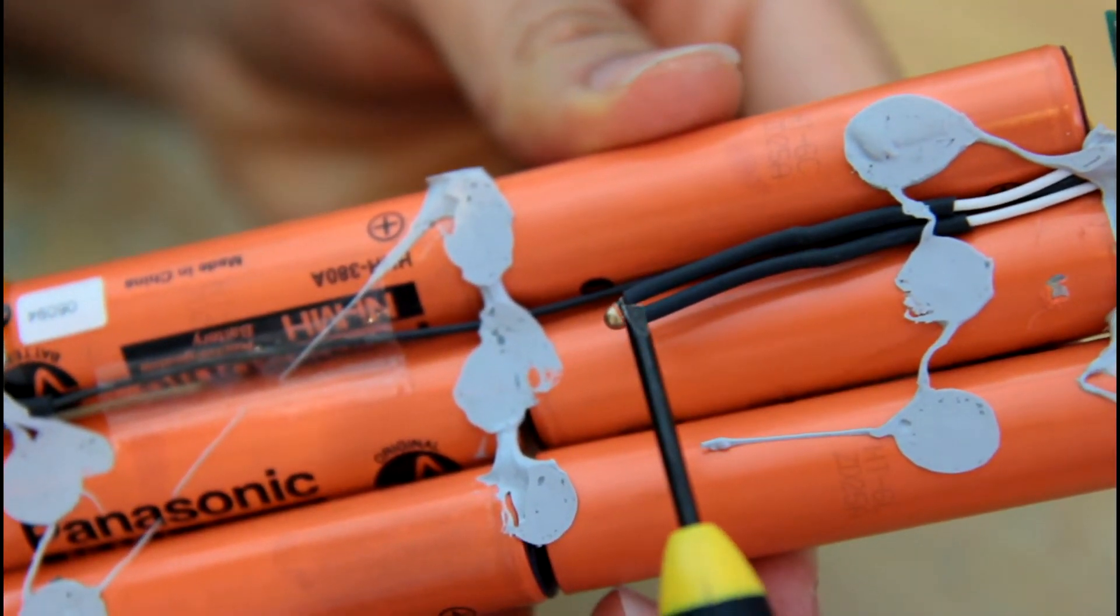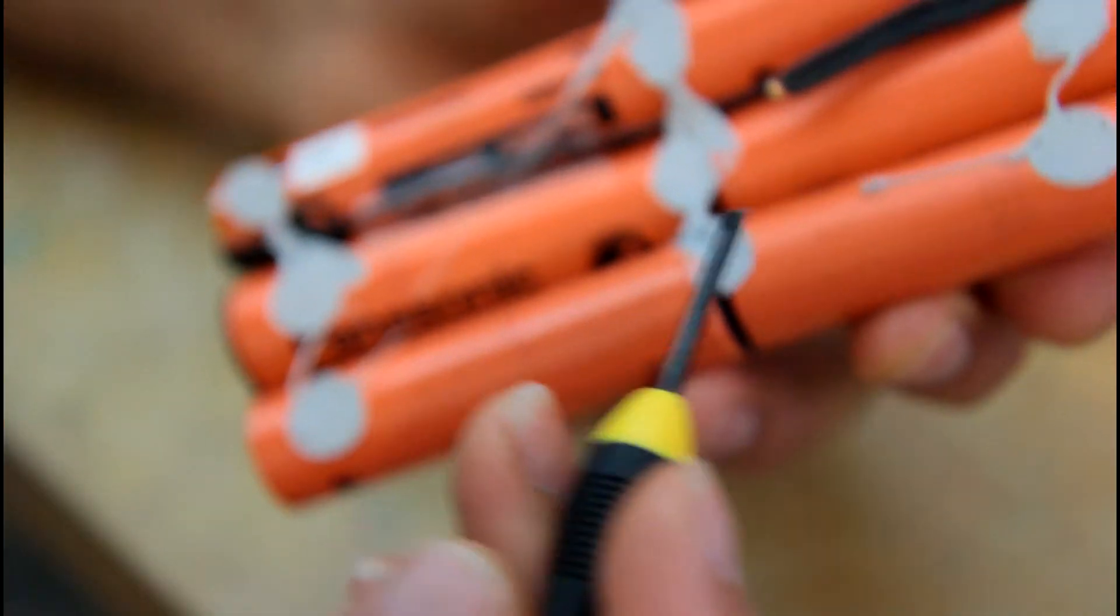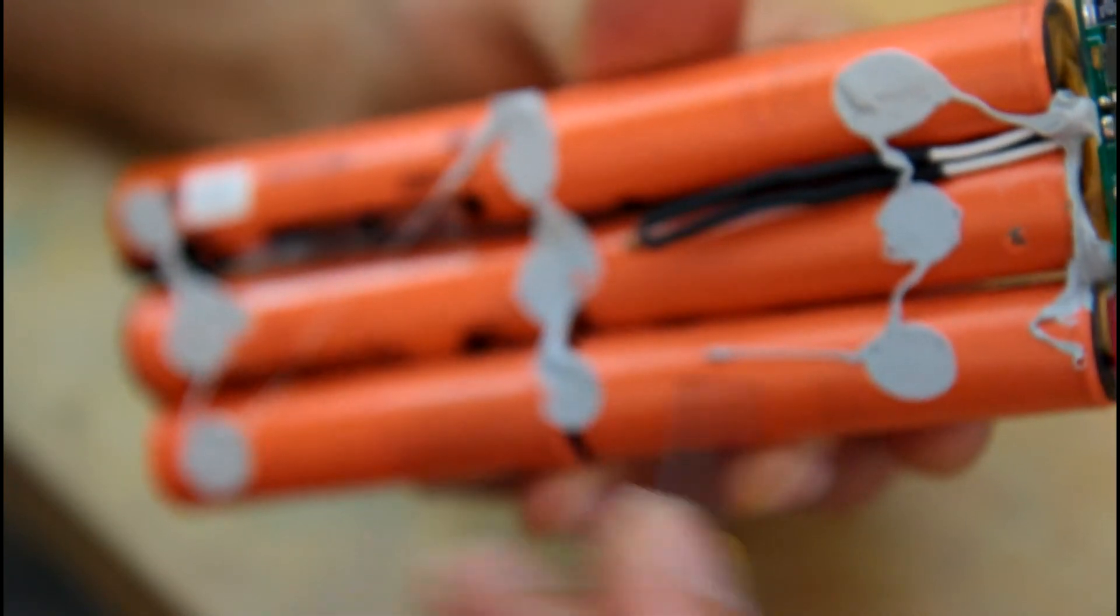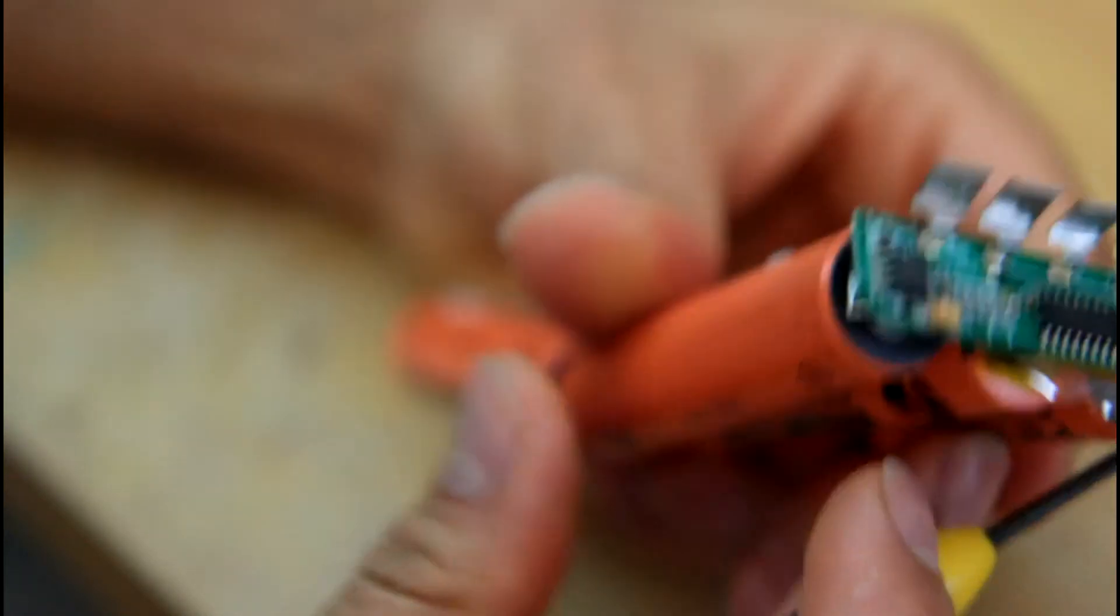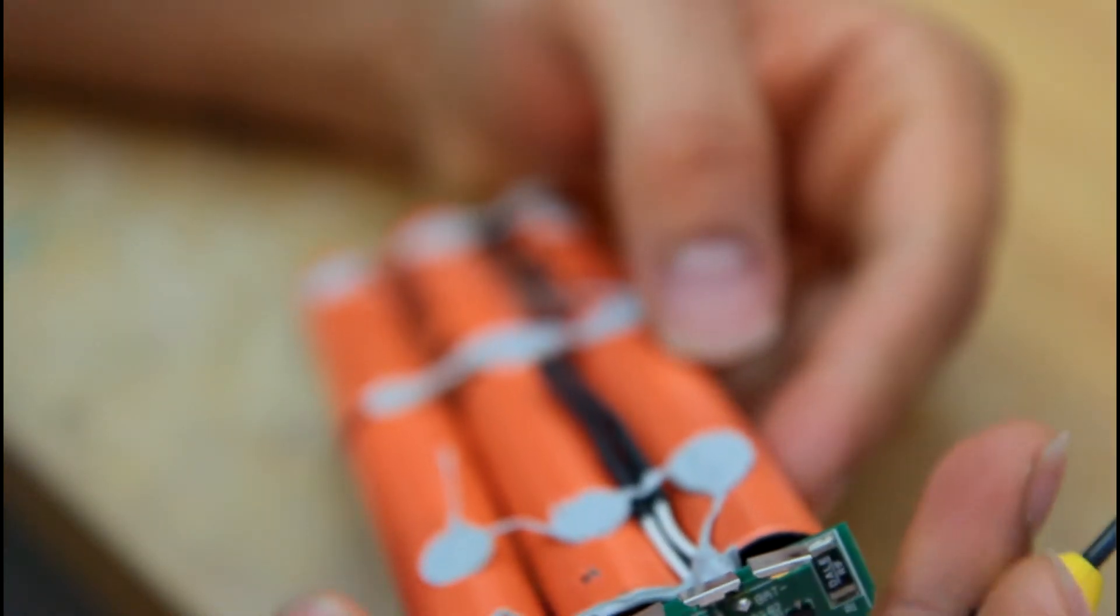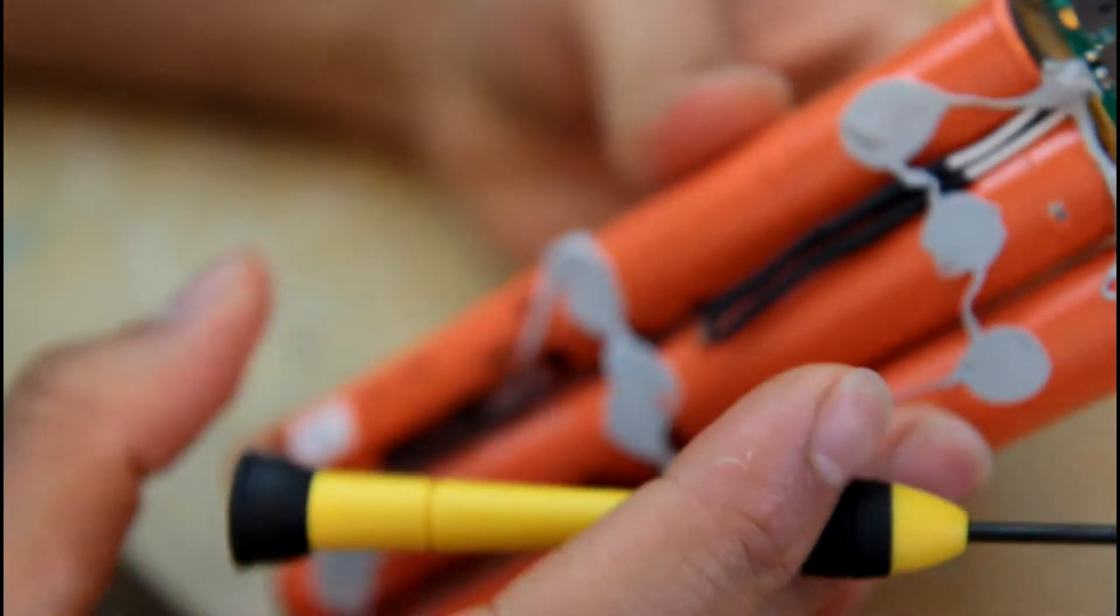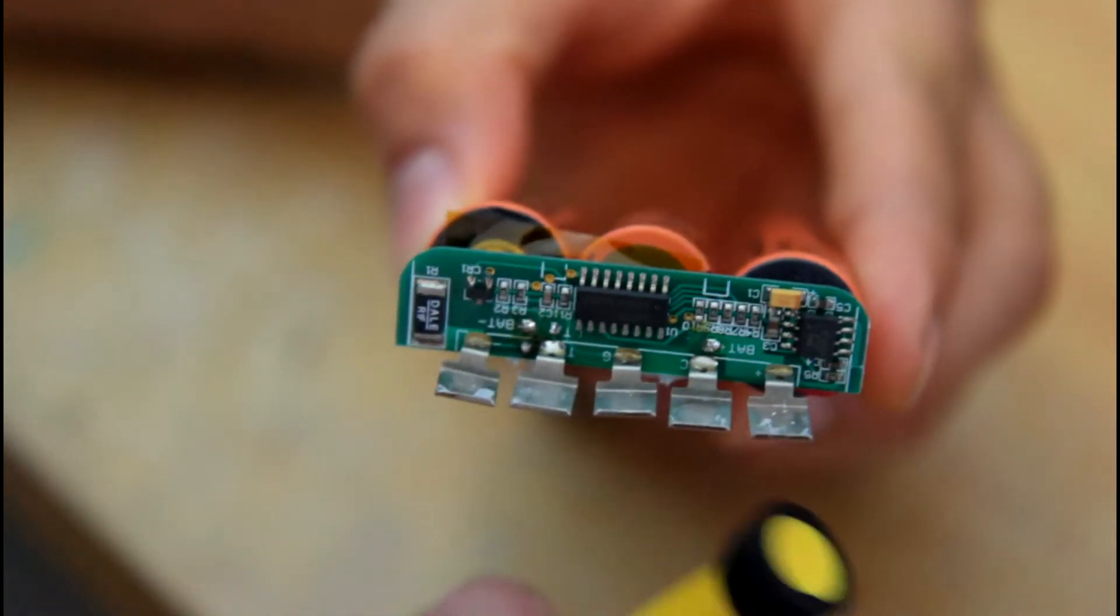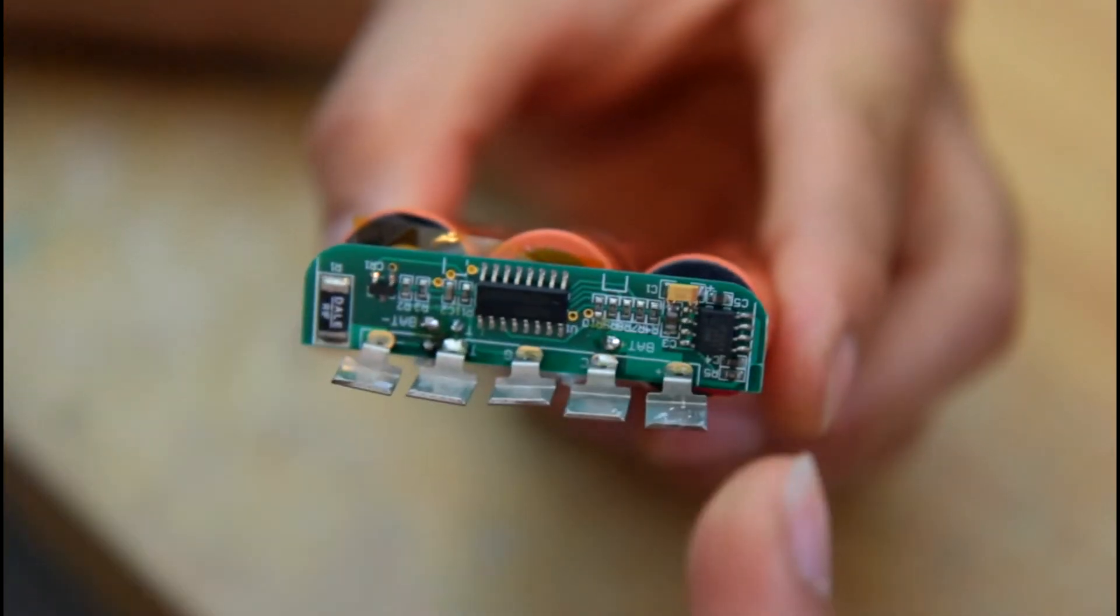This is the temperature sensor. So because it's a nickel metal hydride battery, it does have probably some sort of gassing and stuff. And these type of batteries, the temperature varies in them during charge and discharge. So that's a big factor in it to understand how the battery charges and discharges.